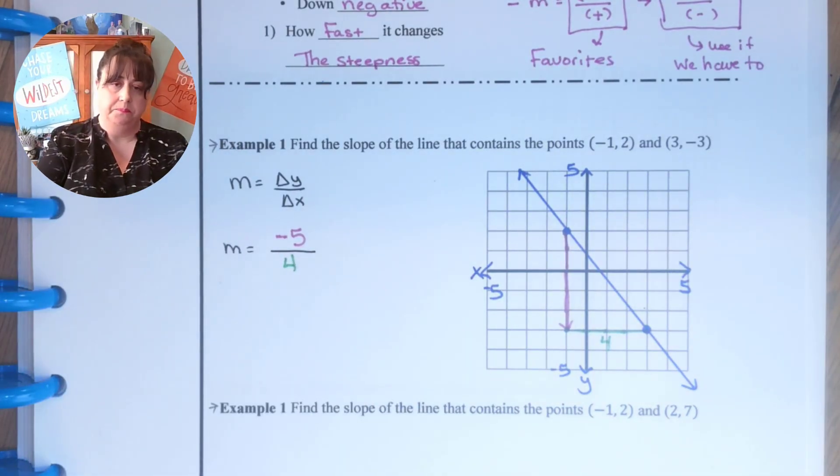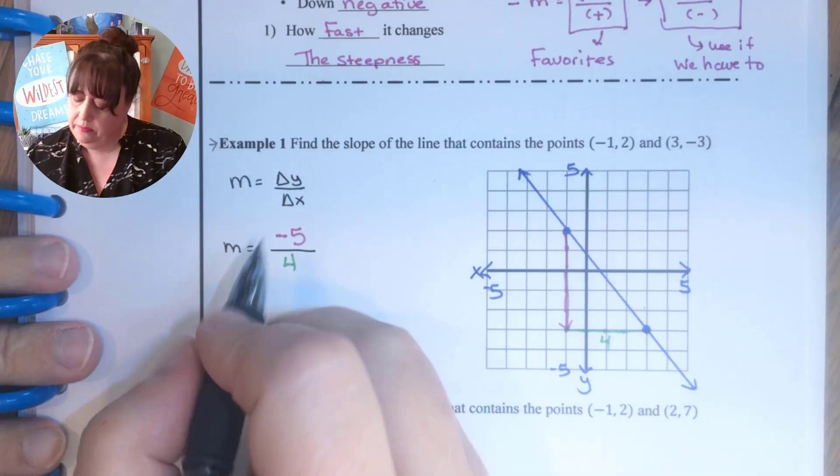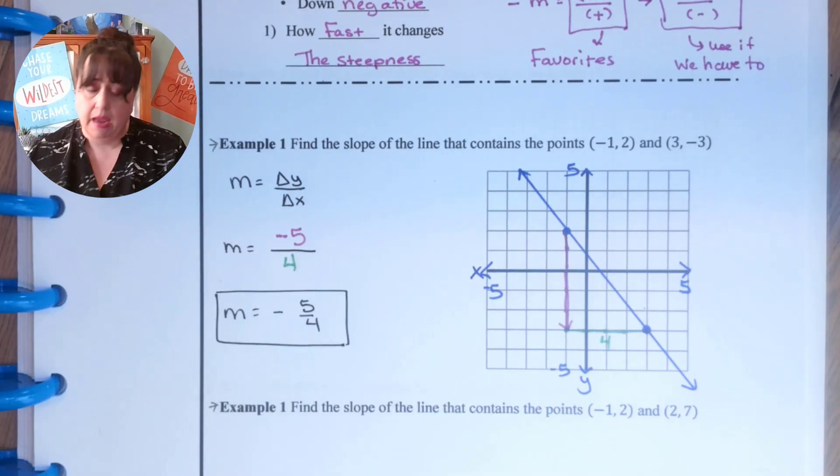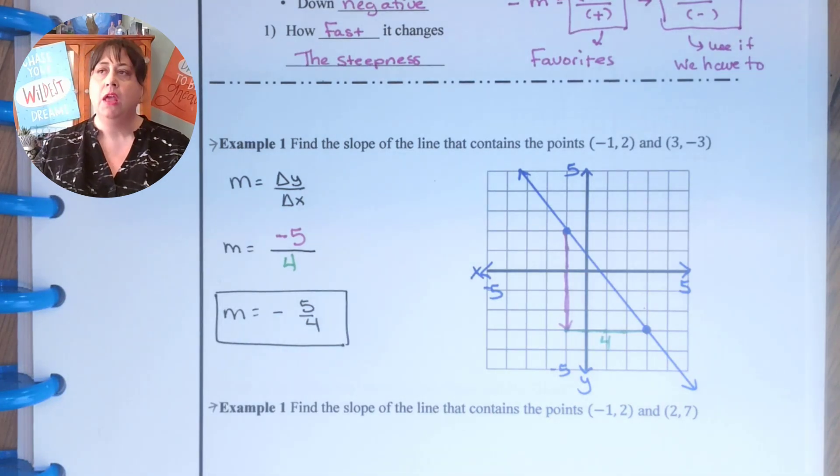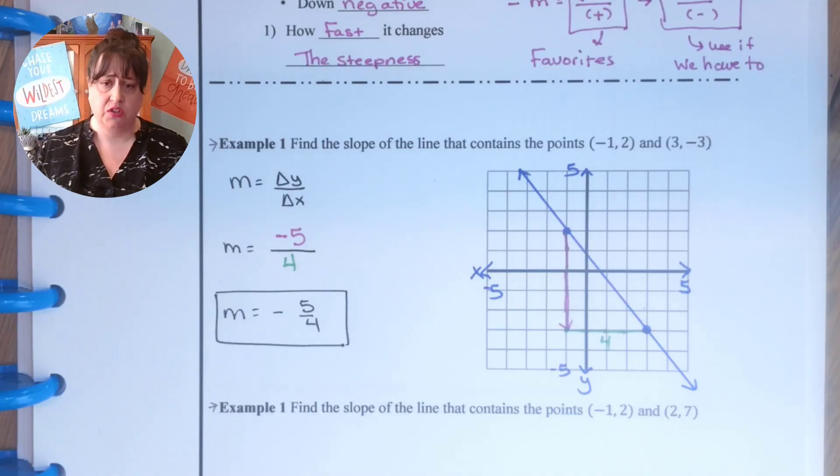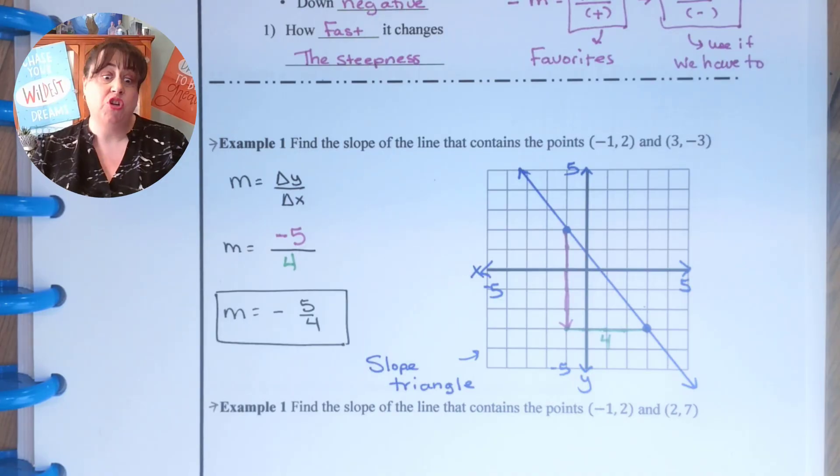We're almost done. We move the negative so that the fraction is negative. And that's it. So when the problem is graphed, we're just looking at it and giving an answer. This is called a slope triangle, and a slope triangle is enough to show your work.